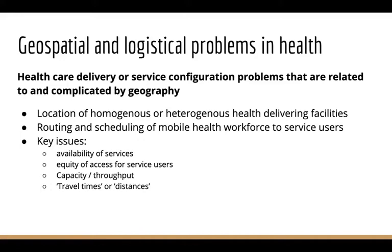There's nearly always some sort of capacity issue, particularly in routing and scheduling, or it might be a throughput issue. For example, if you are locating stroke units, you might want to aim for a certain number of strokes to be allocated to that particular hospital. And at the heart of this is nearly always something to do with travel time or distance from the hospital.